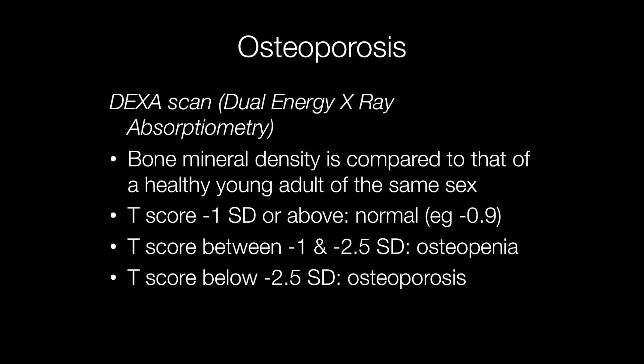The gold standard for diagnosing osteoporosis is the DEXA scan, where the bone mineral density is compared to that of a healthy young adult of the same sex. If the T-score is minus 1 or more, for example minus 0.9, the result is normal. If the T-score is between minus 1 and minus 2.5 standard deviations, this indicates the patient has osteopenia. And if the T-score is below minus 2.5 standard deviations, this means the patient has osteoporosis.